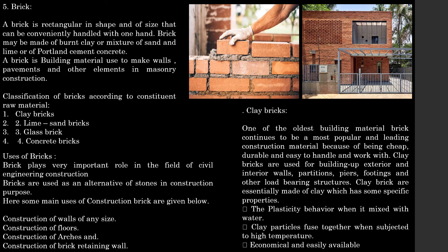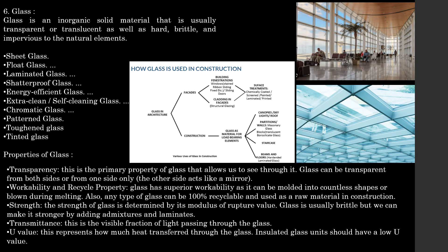The sixth material is glass. Glass is an inorganic solid material that is usually transparent or translucent, as well as hard, brittle and impervious to natural elements. There are different types of glass: sheet glass, float glass, laminated glass, shatterproof glass, energy efficient glass, extra clean glass, chromatic glass, pattern glass, toughened glass and tinted glass. Properties of glass: transparency is the primary property of glass, along with workability and recycle property.